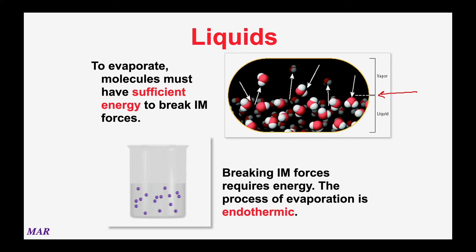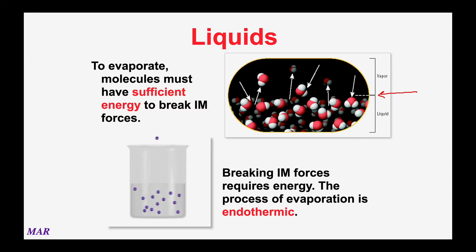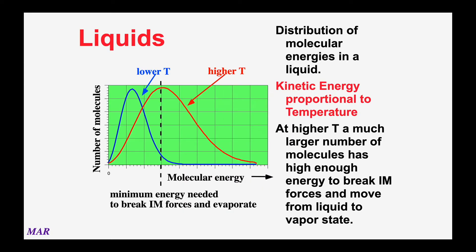Going from liquid to gas you have to break those intermolecular forces — it's endothermic. Molecules of a liquid have a range of kinetic energies; some have enough energy to overcome intermolecular forces. If these high-energy molecules are at the surface of the liquid, they can escape into the gas phase. This is an open container, so the gas molecules escape into the surroundings. In a closed container, things are different. According to KMT, only the surface molecules can actually break free — molecules deeper in the liquid would just transfer energy through collisions and remain liquid.